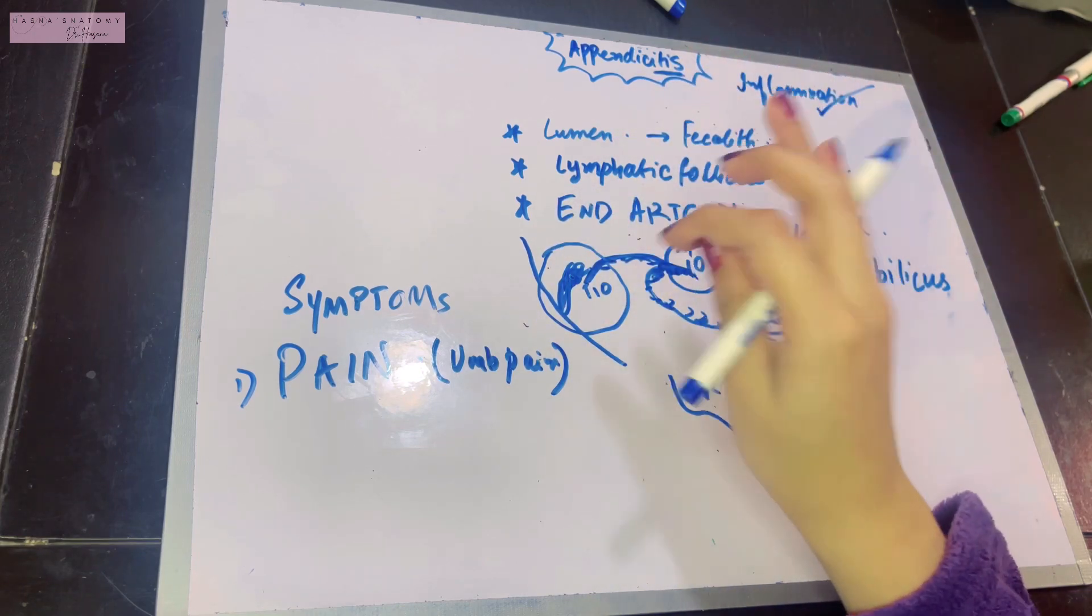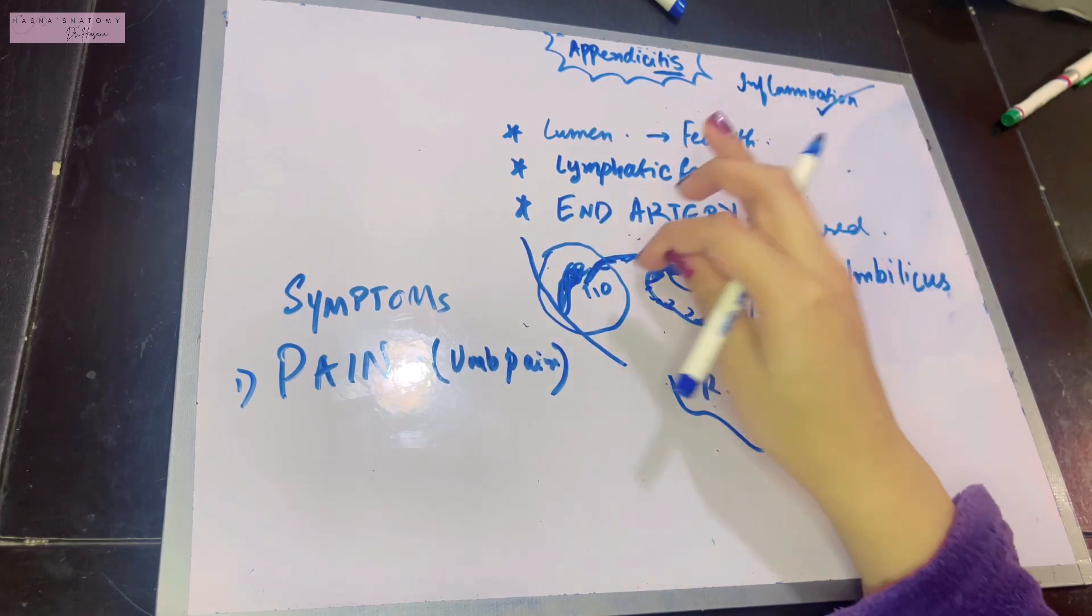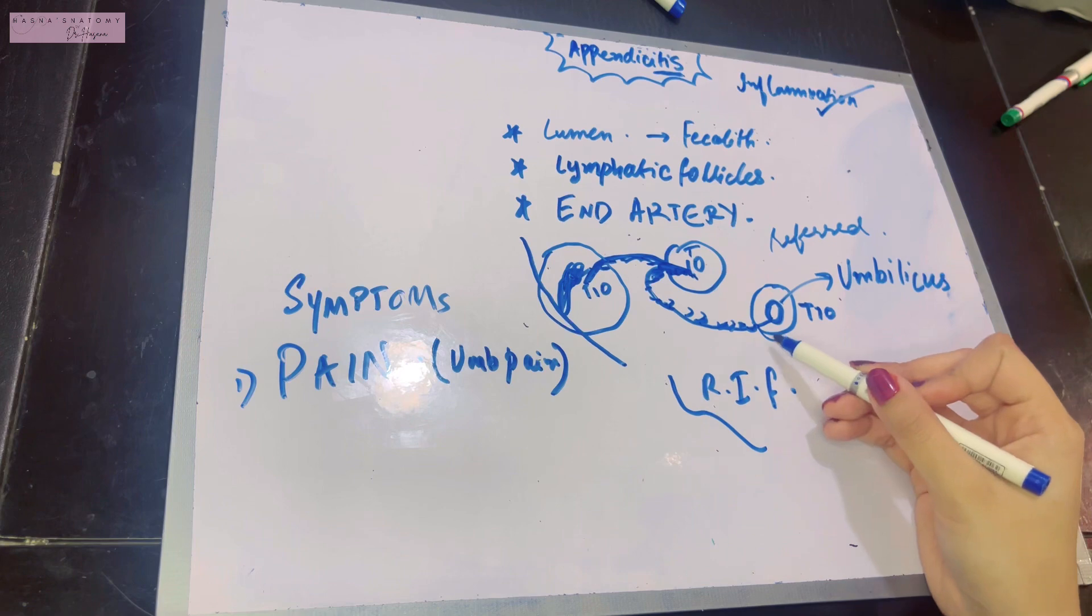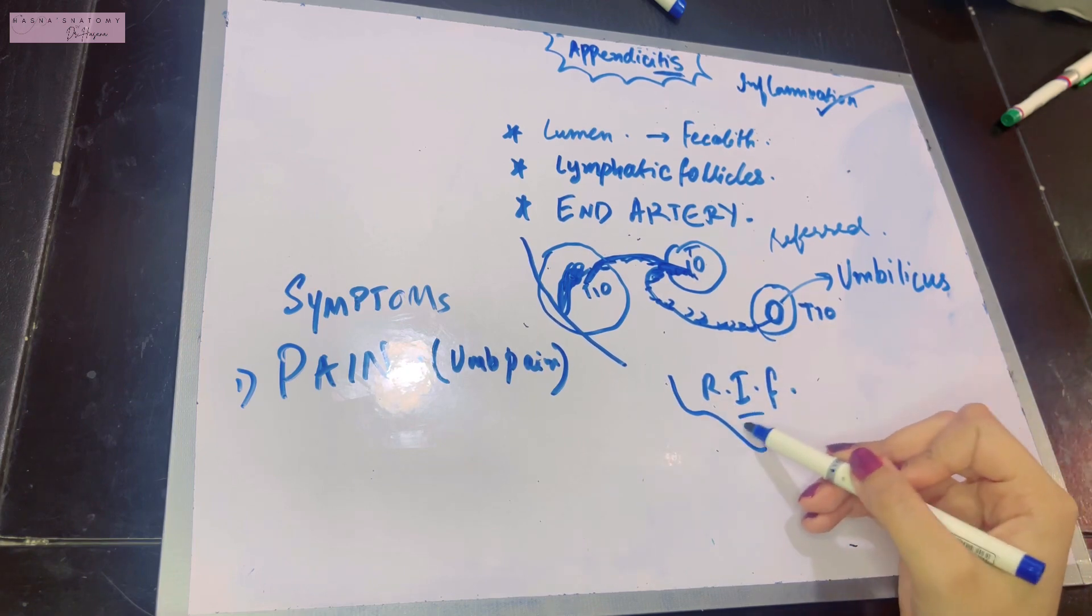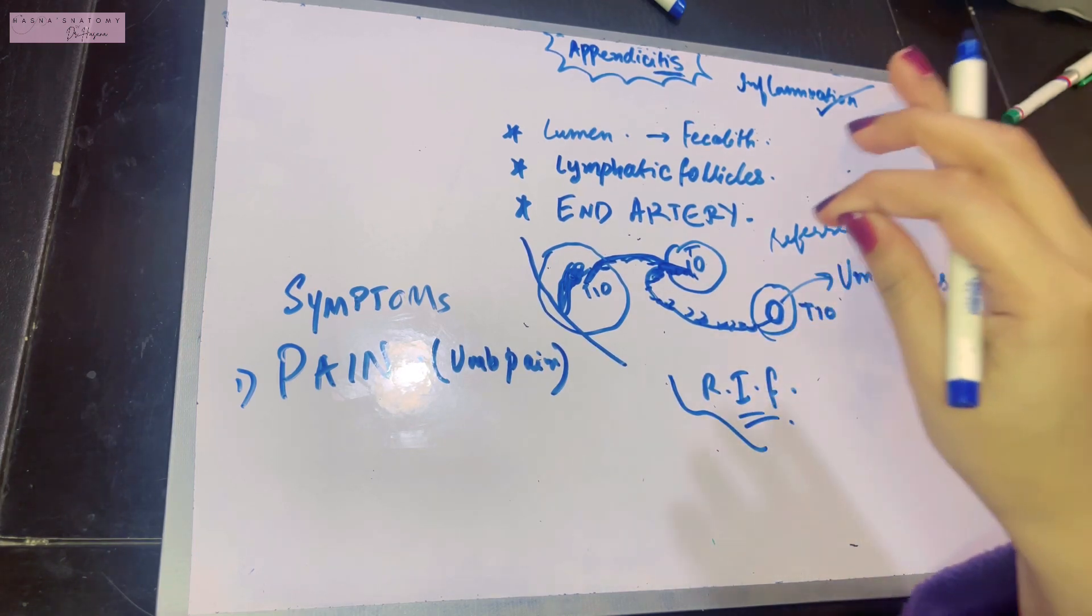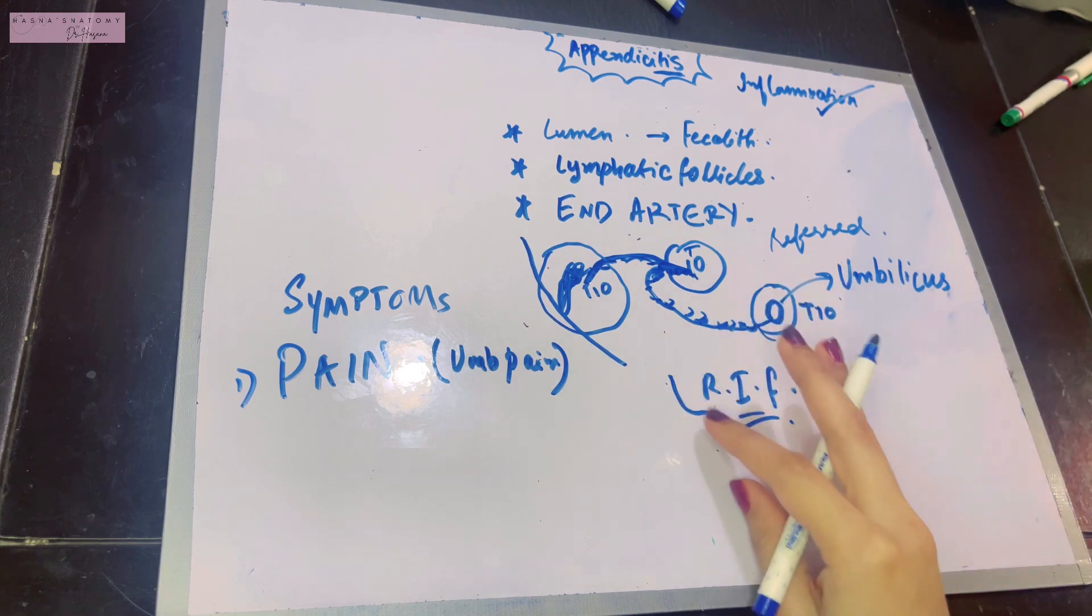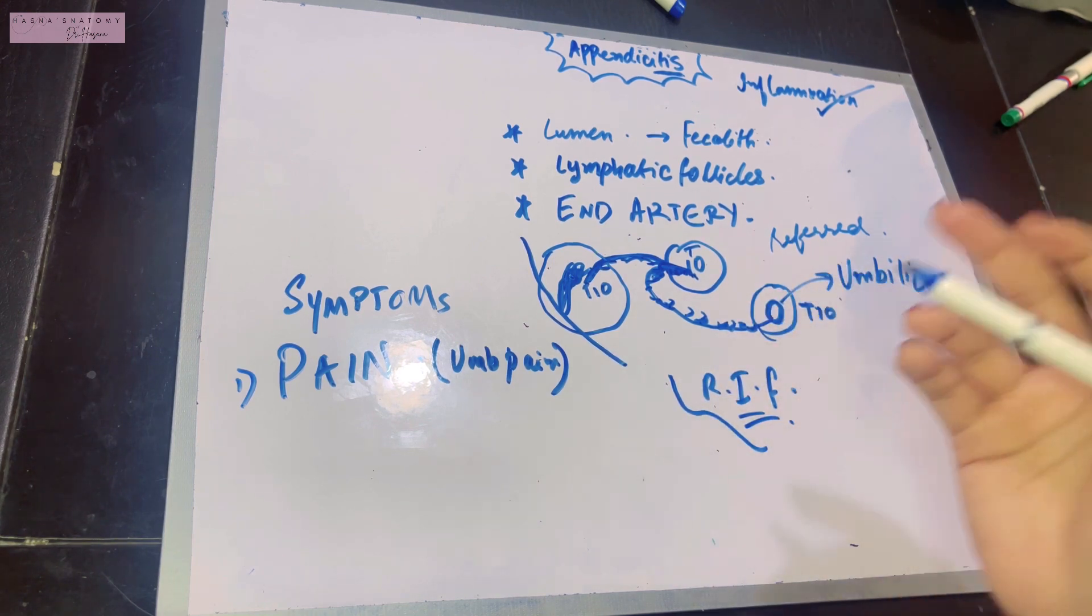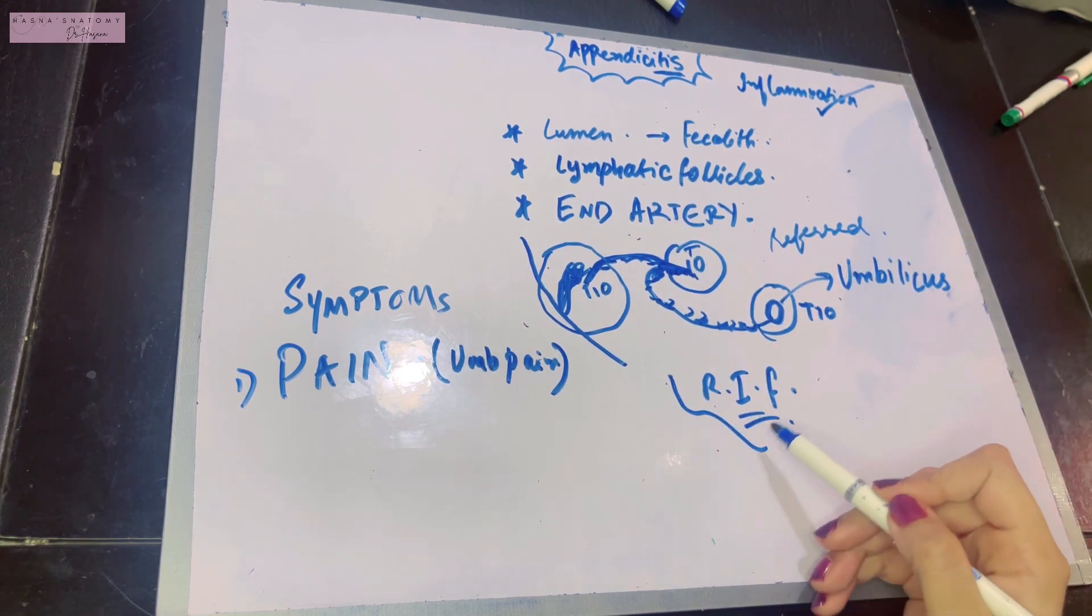We all know the parietal peritoneum is pain sensitive. So if there is pain in the right iliac fossa after the umbilicus, this means peritonitis has occurred—regional peritonitis—where your parietal peritoneum is being involved. Therefore, the pain is in the right iliac fossa.